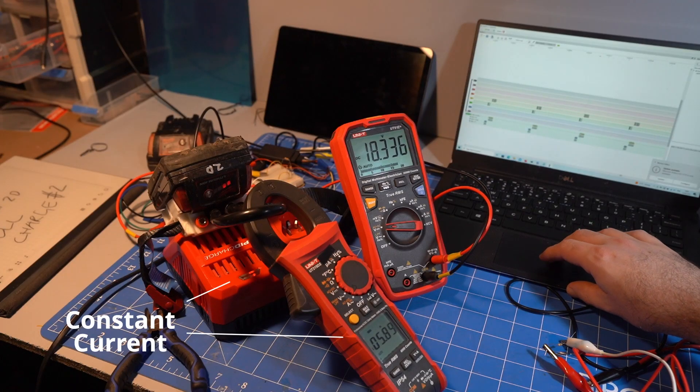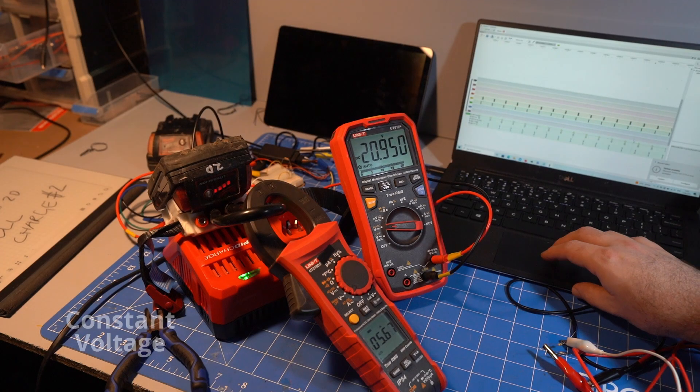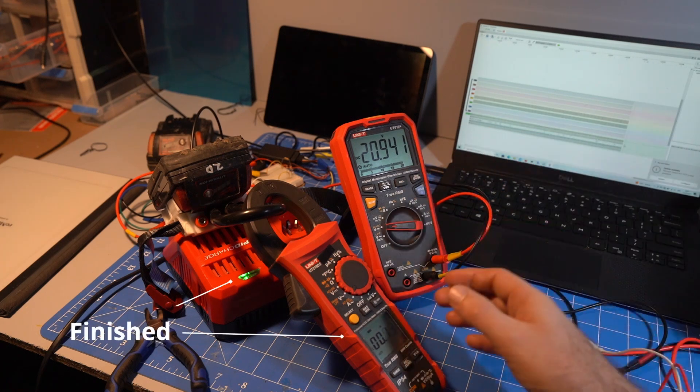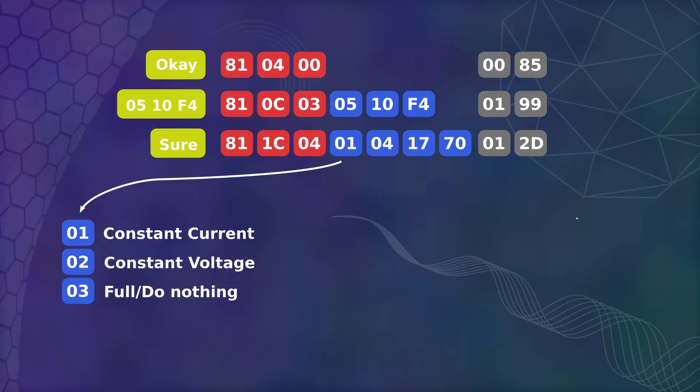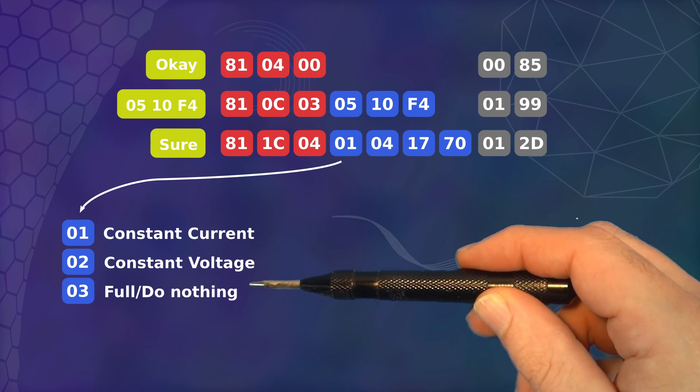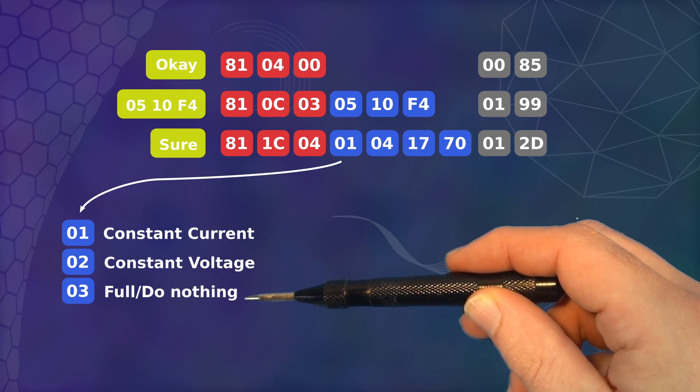The 'sure' messages are fairly easy to decipher. Filming a full charge sequence and watching the charger lights and charging current shows that the first payload byte is a status byte. 1 is for constant current charging, 2 is for constant voltage, and 3 means I'm fully charged, stop.